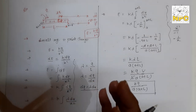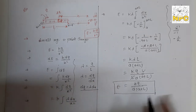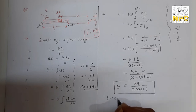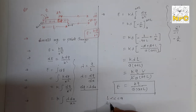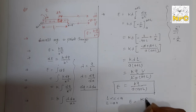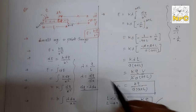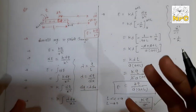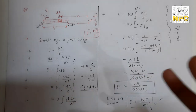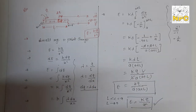Special case: if the length L of the wire is very small compared to distance a (L << a), then L tends to zero and can be neglected. The formula becomes E = kQ/a². This is exactly the point charge formula - meaning if the rod's length is negligible, it behaves like a point charge. This problem is very important for board exams.